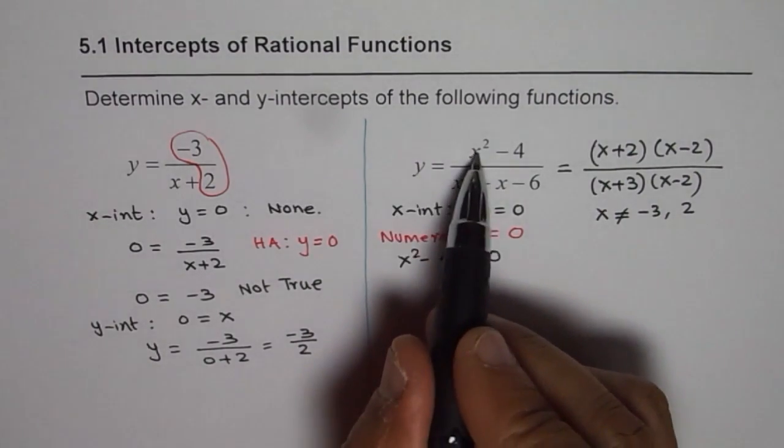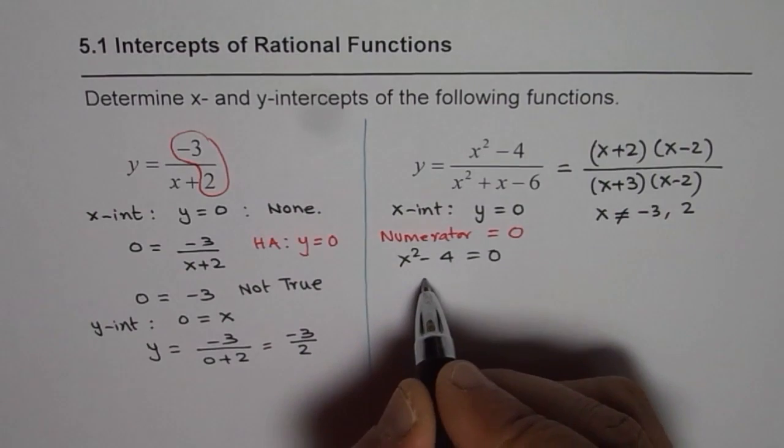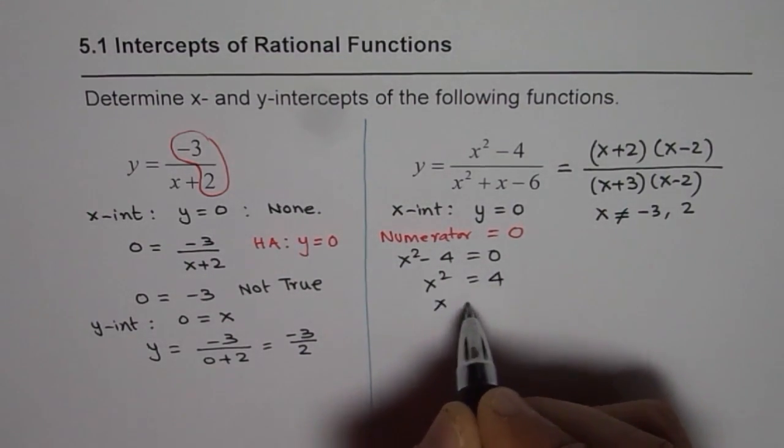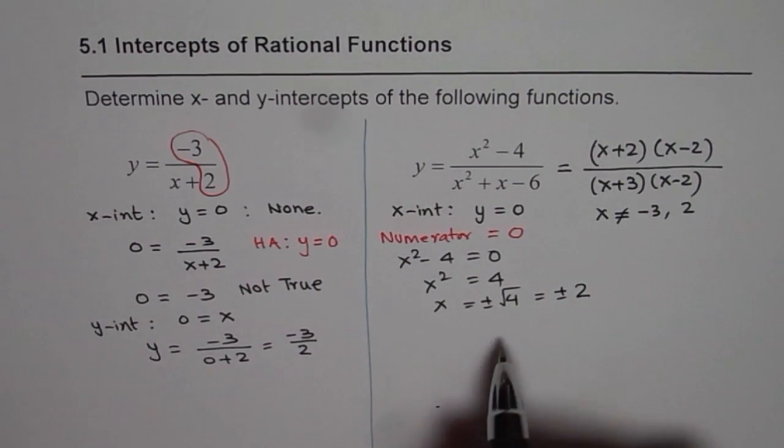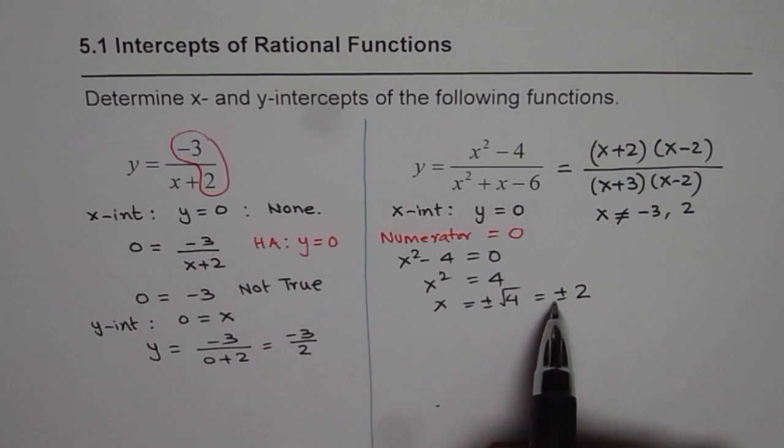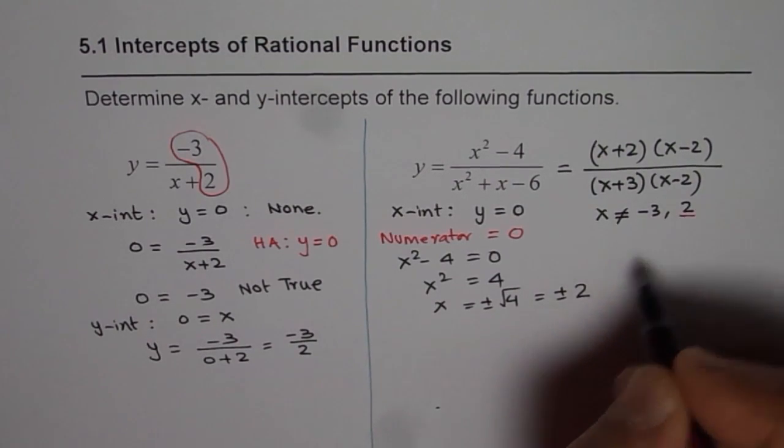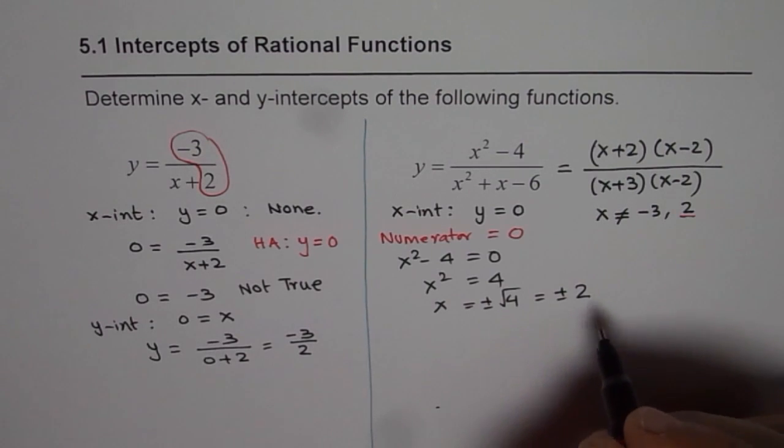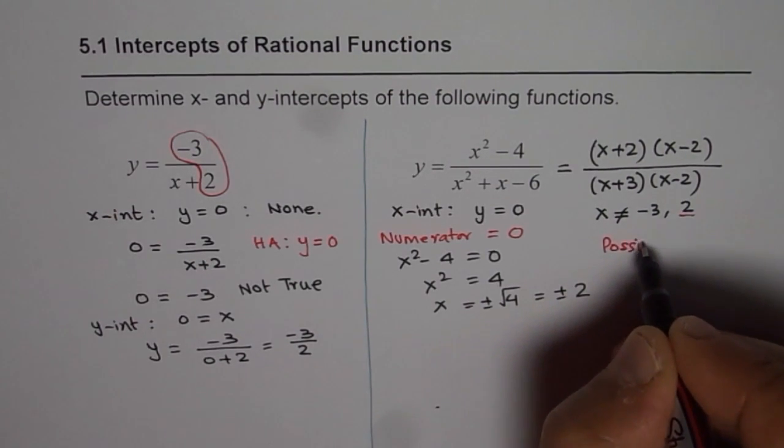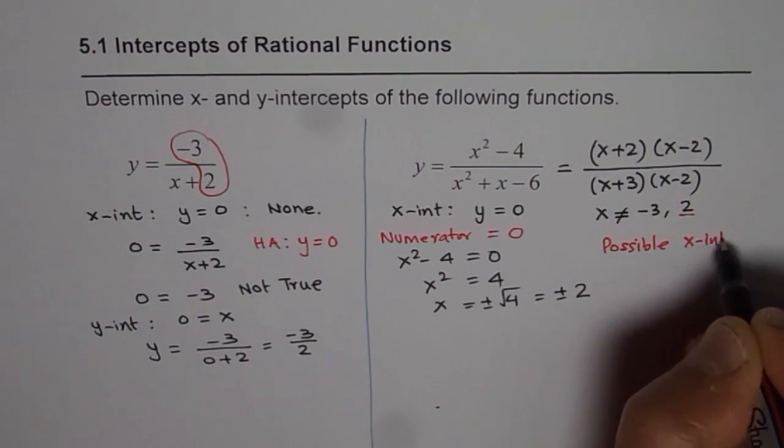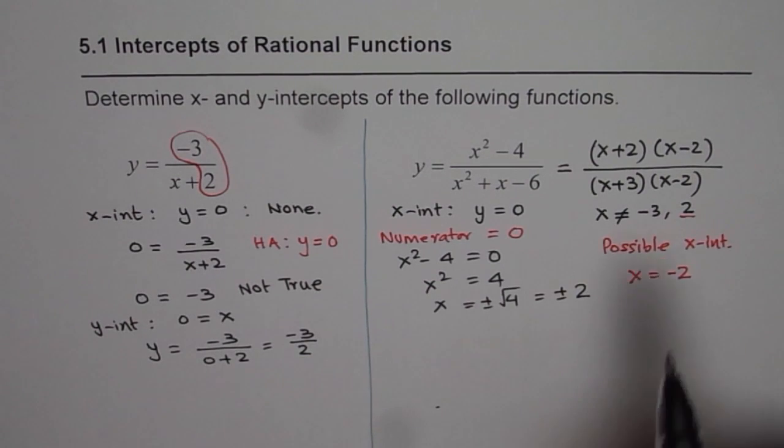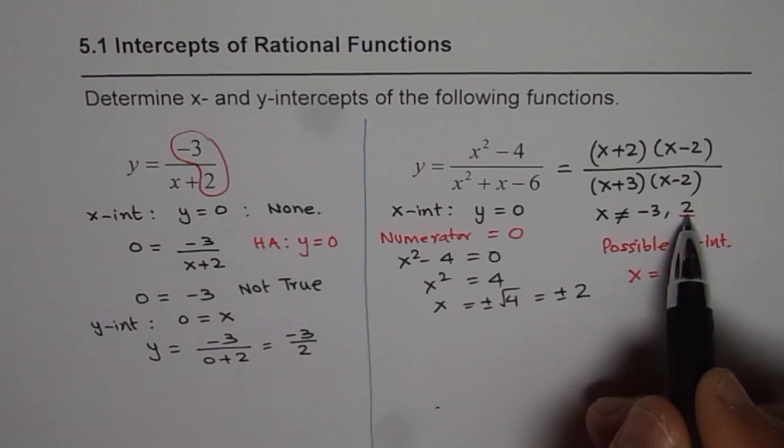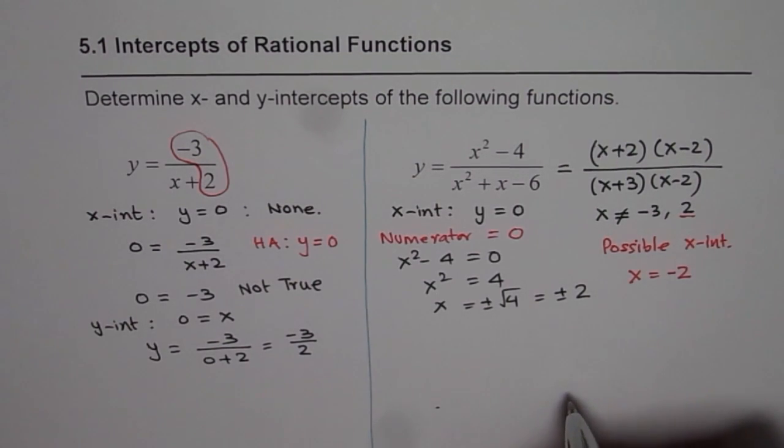x squared minus 4 equals 0 gives us x squared equals 4, or x equals plus minus square root of 4, which is plus minus 2. But remember the restrictions. x cannot be 2. So we could have only one possible x intercept, which is at x equals minus 2. Since x equals 2 will make denominator 0, it is not in the domain. So there is only one x intercept.